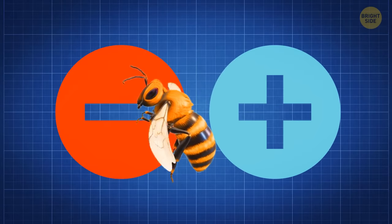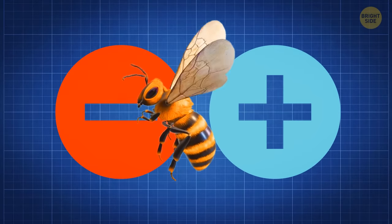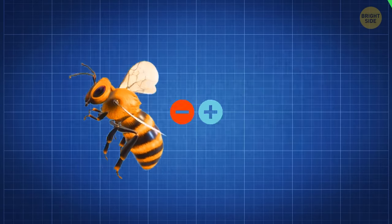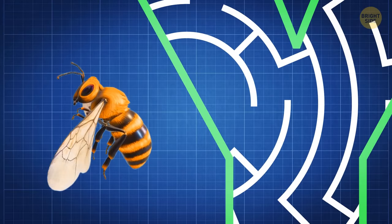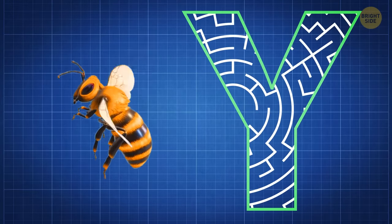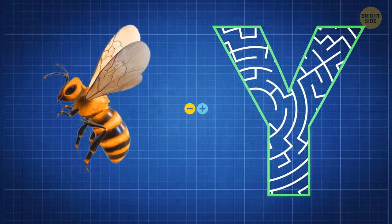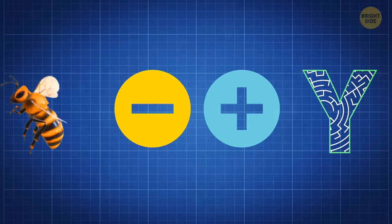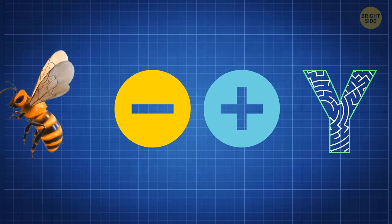That's right. Bees seem to grasp the concepts of addition and subtraction. Researchers set up special math mazes, shaped like the letter Y, for the bees to navigate. Instead of using numbers or symbols, which bees can't understand, they used colors.